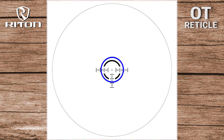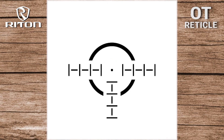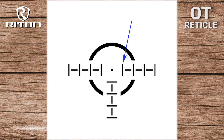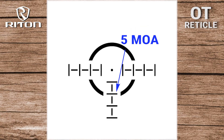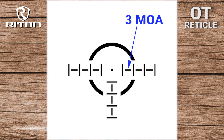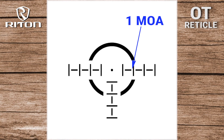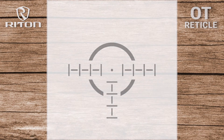With a large illuminated center circle you can quickly engage targets, and with a precise one minute of angle dot you can make precision shots. There are five minute of angle between each of the hash marks for both windage and elevation. In between each of the five MOA hashes is a three minute of angle dash with one minute of angle gaps on each side, giving you many aiming points and a clear field of view.